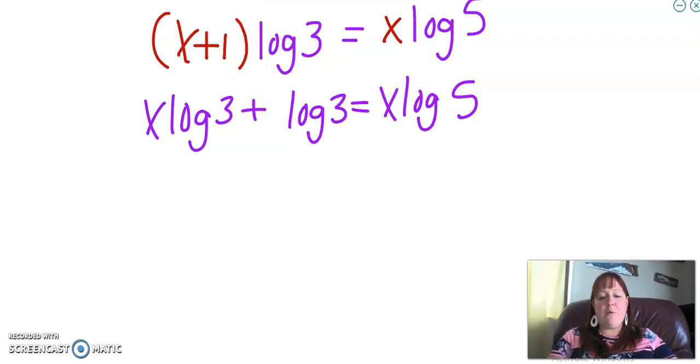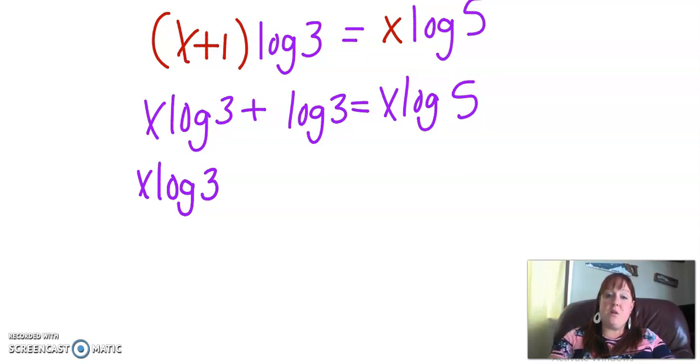So I want to get my x's by itself. So we want to get everything with an x by itself. You see these two, this has an x, this has an x, this doesn't. So let's get this over here, and this over here. Just like with any other expression, when we're trying to get a variable by itself, we get everything that has that variable over onto one side, and then everything else on the other.